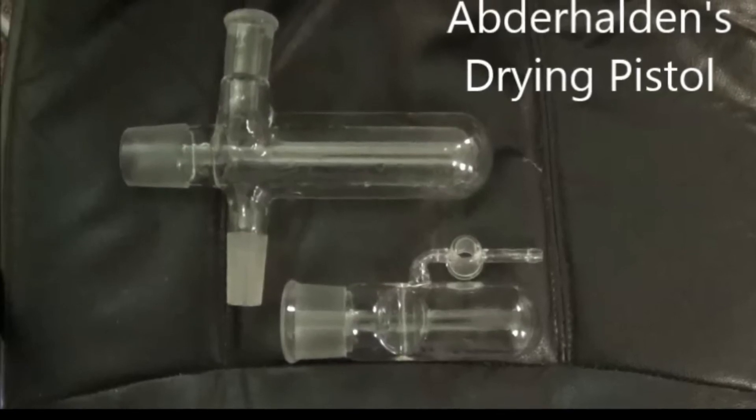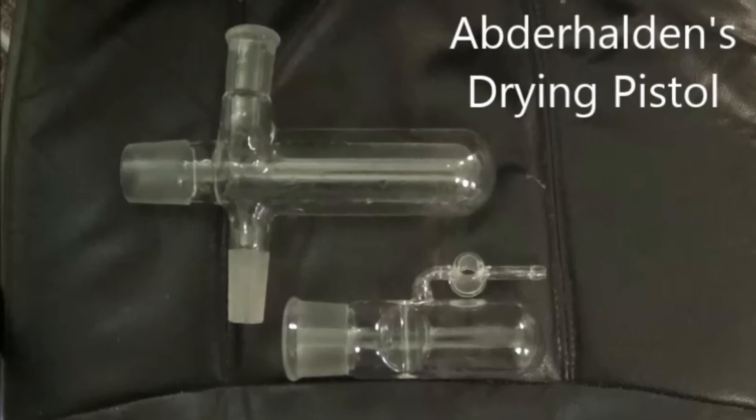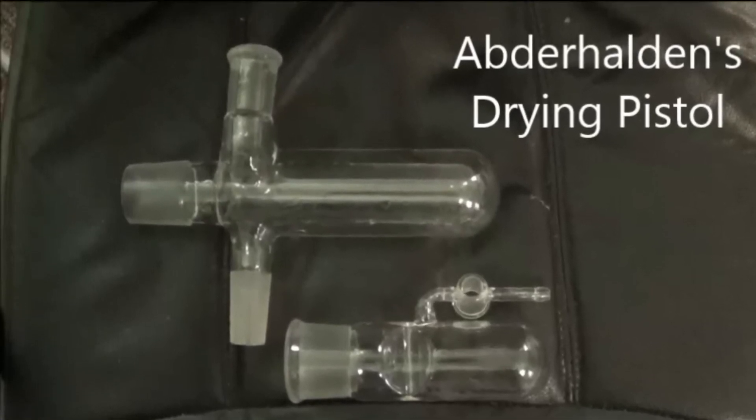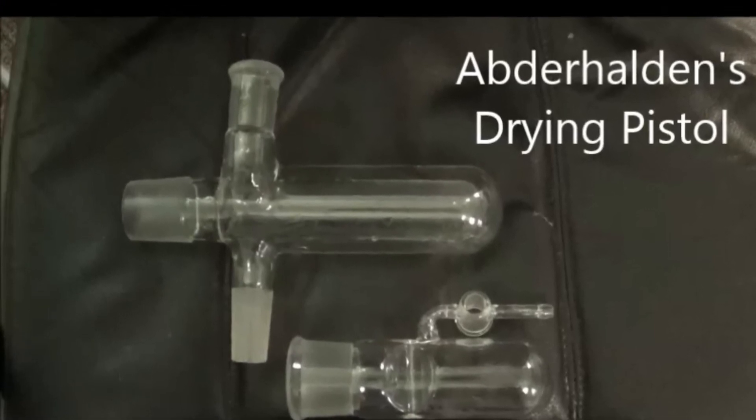This piece of glassware is an older alternative to vacuum drying ovens. Because the sample is heated, it can be dried much faster than in a vacuum desiccator at room temperature. Its drawback is that not as large samples can be placed into the drying chamber.